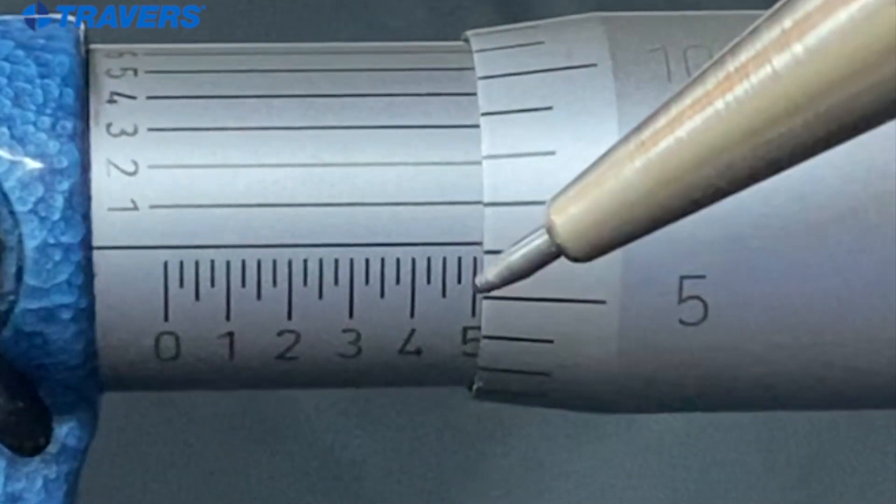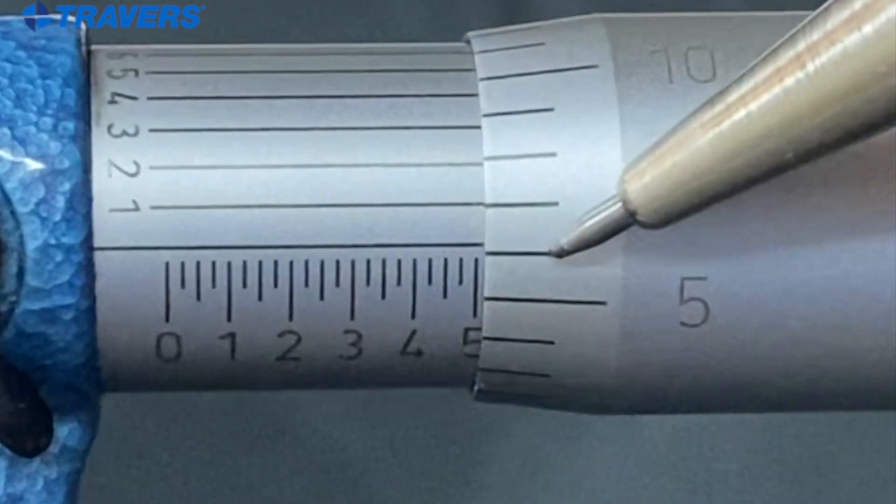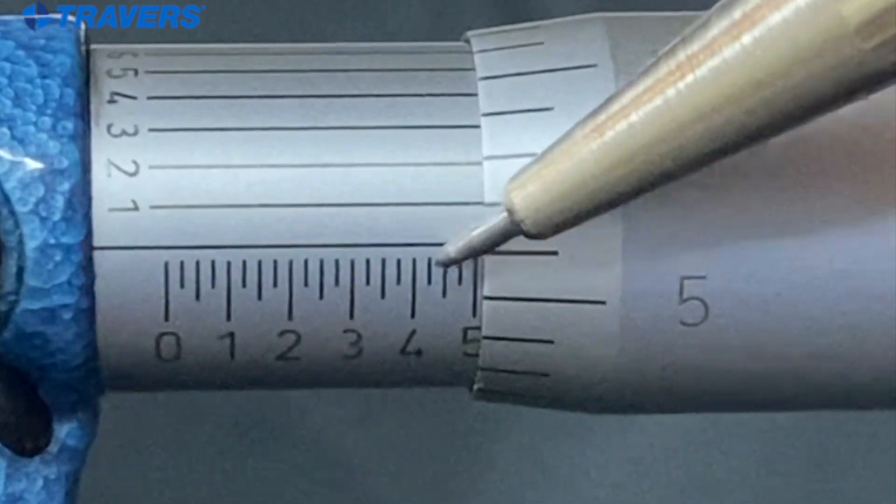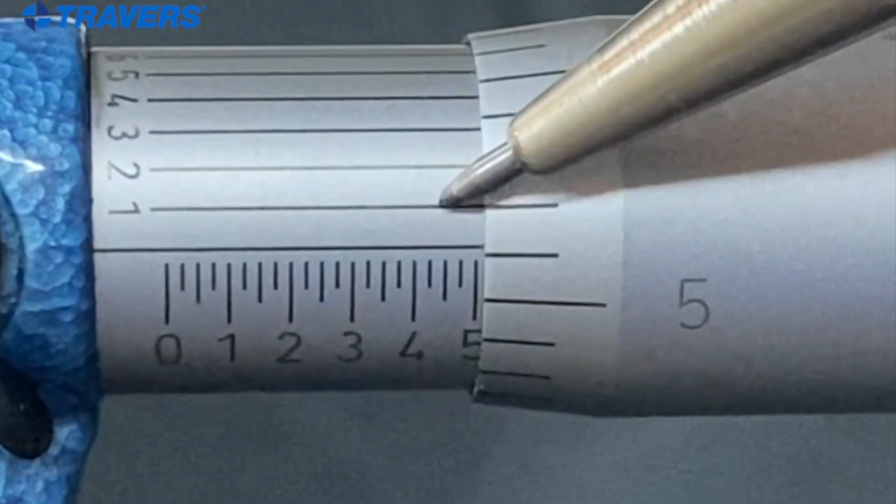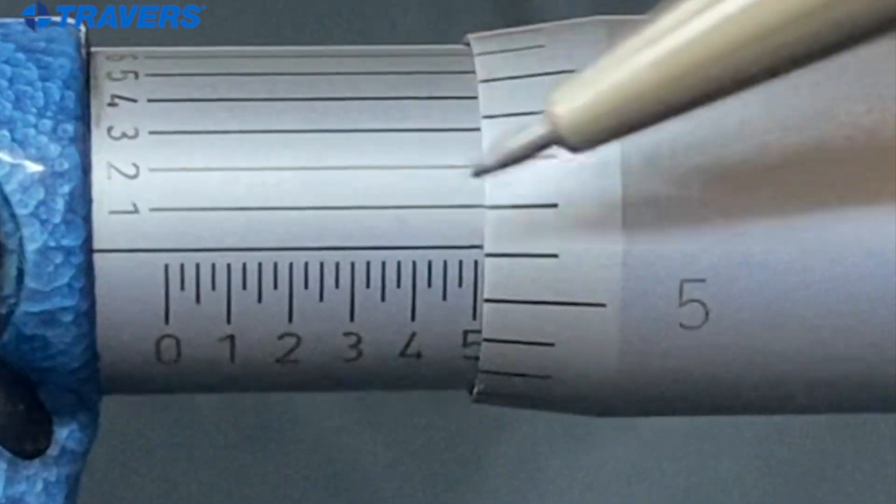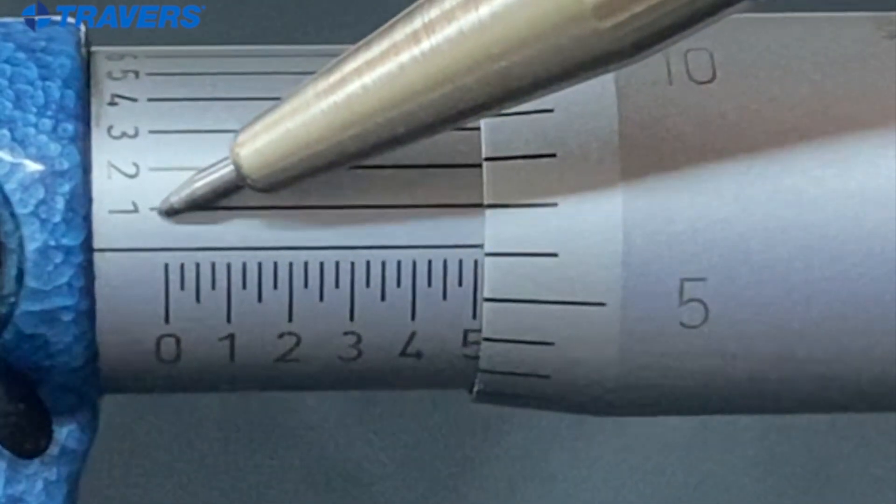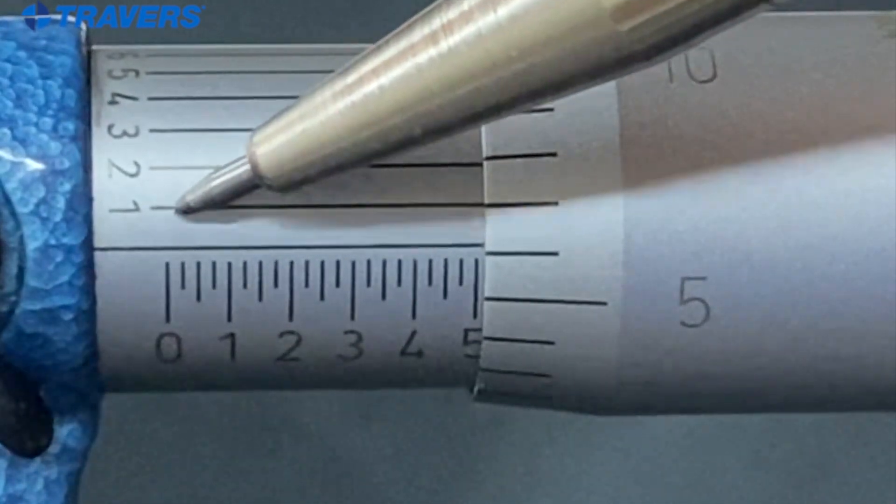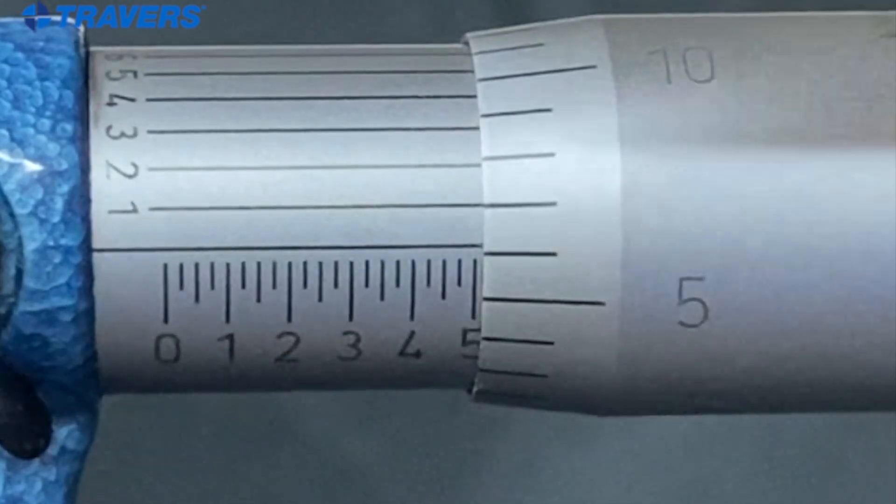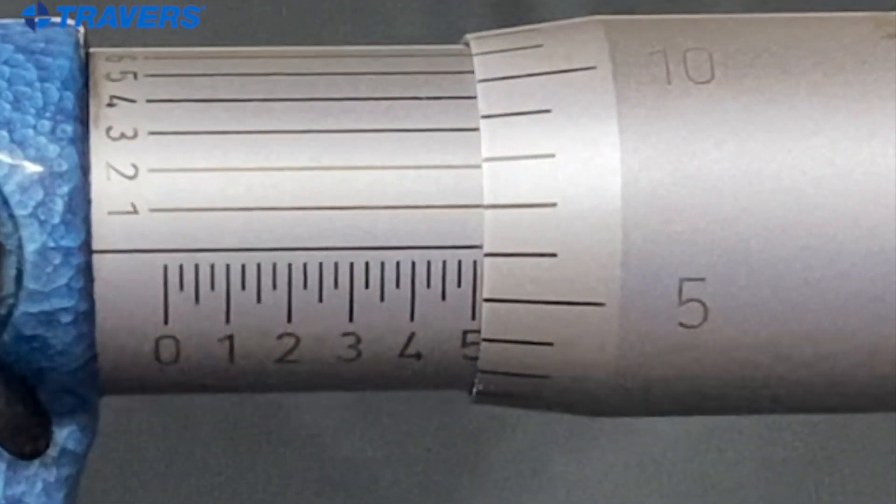So we already have the point five zero six. And now we're going to just tack on to the end of the five zero six. Since this line lines up, that's a number one. And that's what goes on the end of it. So this measurement is actually point five zero six one.